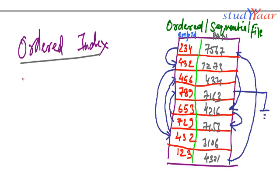So I would have an index which is going to have values like 234. Since this is an ordered index, the value in the index would be sorted. So first we have 123, then we would have 234, we would have 432. We would have only one 432. What do we have next? We have 456, then we have 653 and we have 729 and 789.